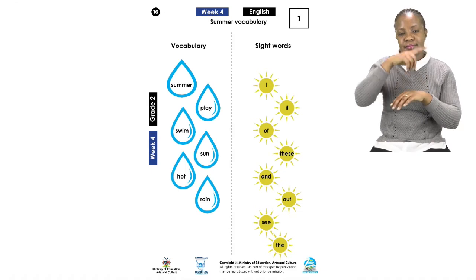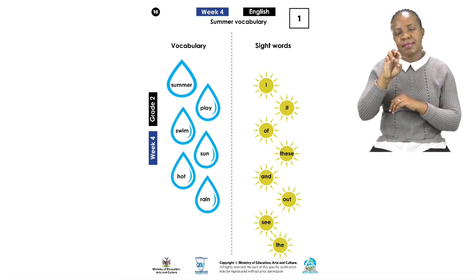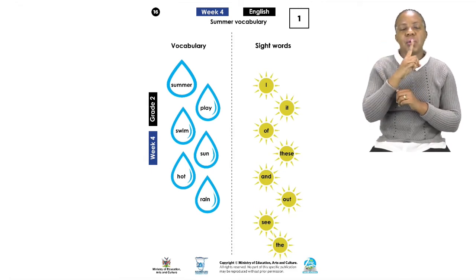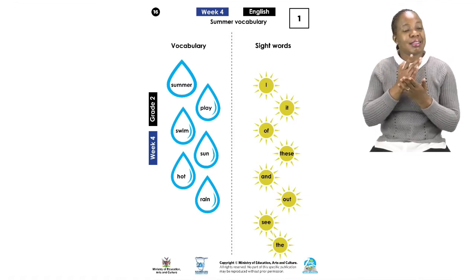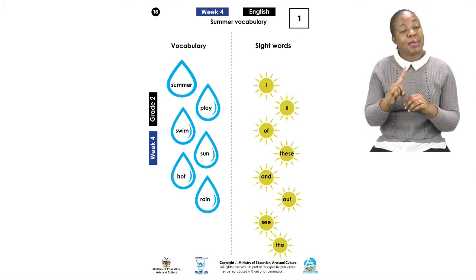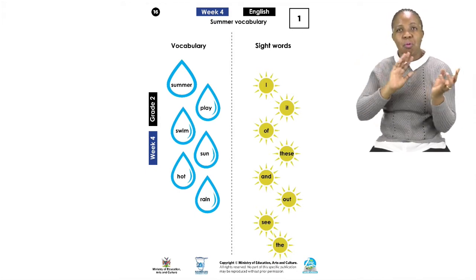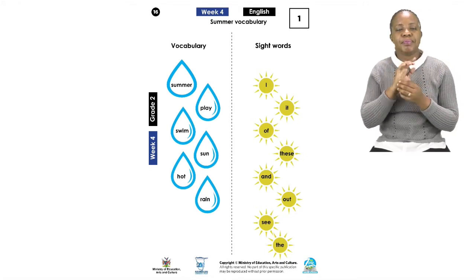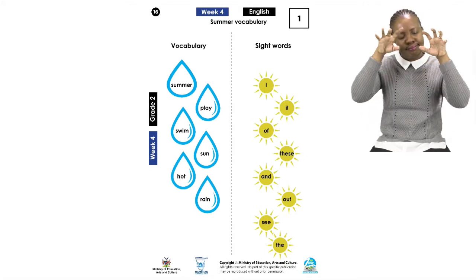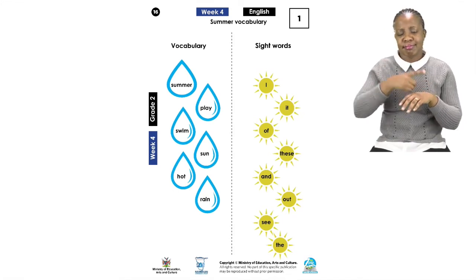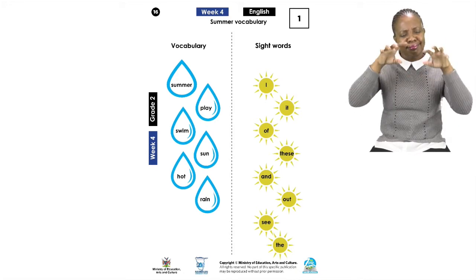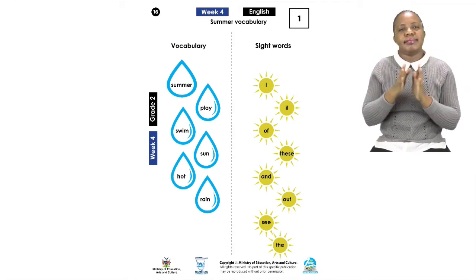Hot — the opposite of hot is cold. When something is hot, it can be very dangerous to touch, but hot can also mean the weather. Outside can be hot. Then we have rain. Rain is not a new word — we always see rain in summer. Rain is little drops, just like the ones around our vocabulary words.